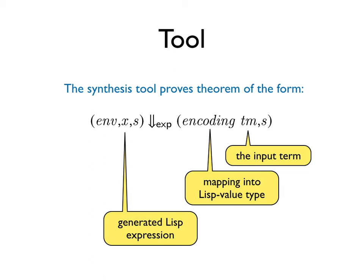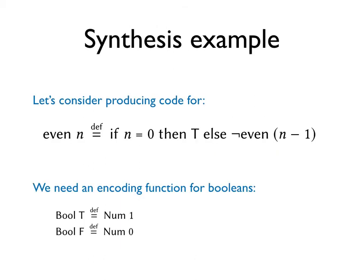The next slide describes part of one of the paper's examples. Let's consider the following definition of the even function. First off, we need a mapping from booleans into LISP values. We decide on representing TRUE as 1 and FALSE as 0.